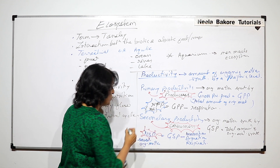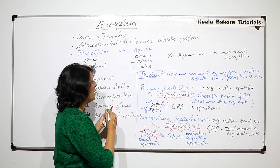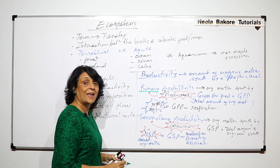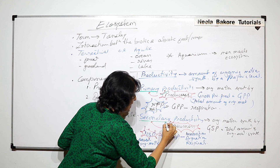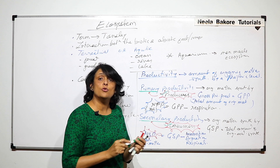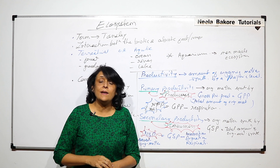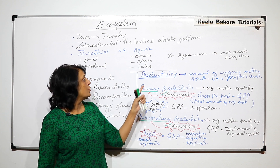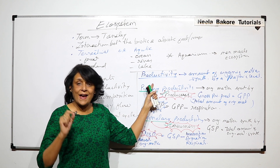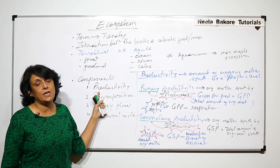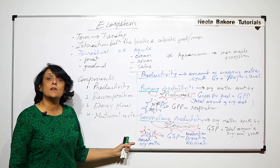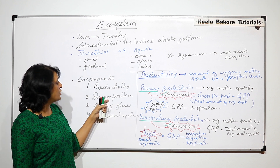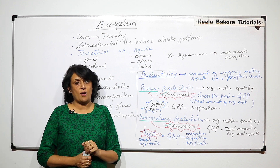The key terms to remember: primary is always for producers and secondary is always for consumers; gross is the total, and net is what remains after expenditure. This is the first component of our ecosystem responsible for maintaining it. In the next part, we will talk about the second component — decomposition.